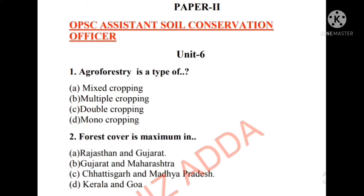Hello, namaskar everyone, welcome back to my channel QuizAdda. I hope you all are doing well. Today I will discuss a quiz of MCQs from Unit 6, that is about agroforestry — basically objectives, potential, subsystem, practice, constraints, diagnosis, design methodology, food and nutritional security, soil improvement, carbon sequestration, microclimate amelioration, and industrial requirements. Without wasting time, let's start the MCQ session.